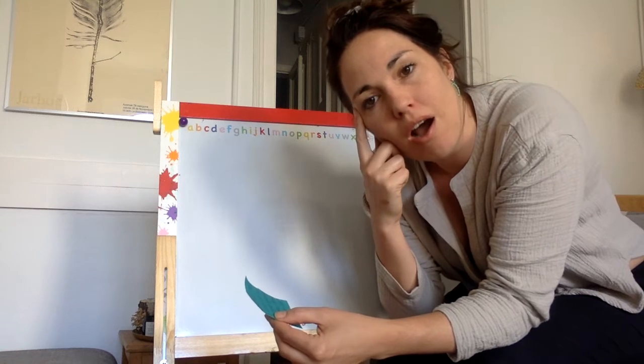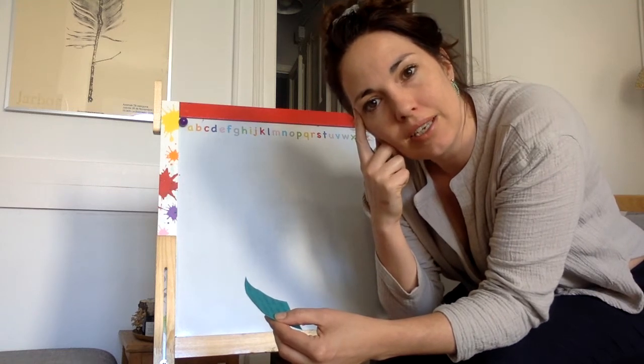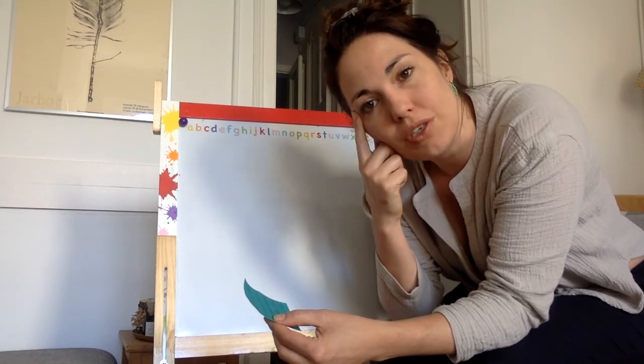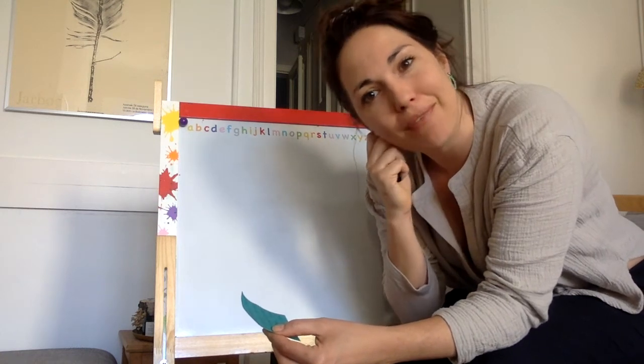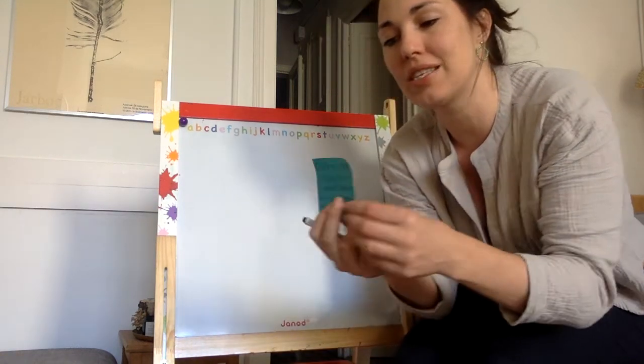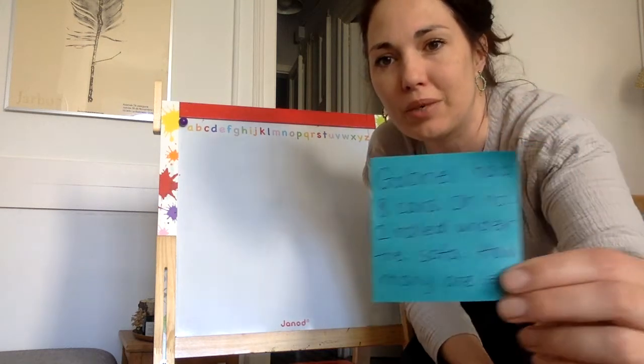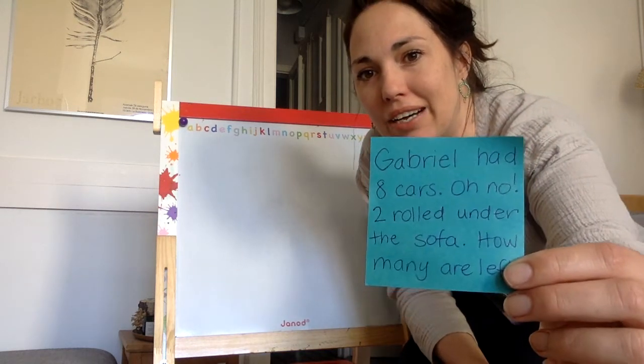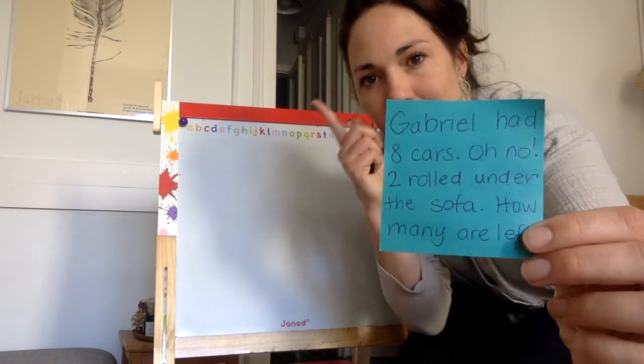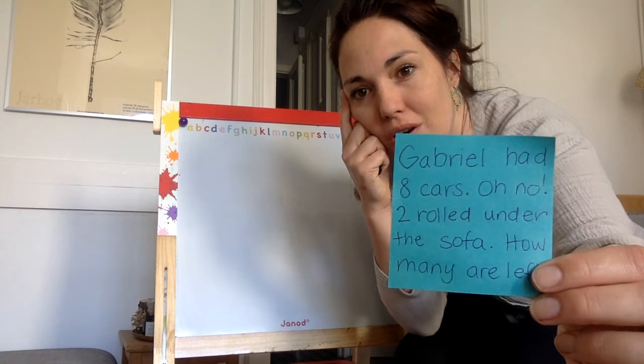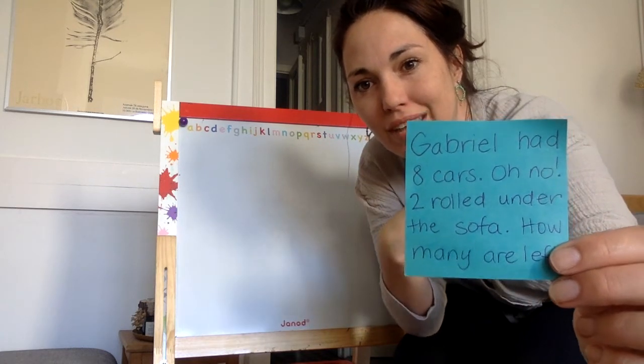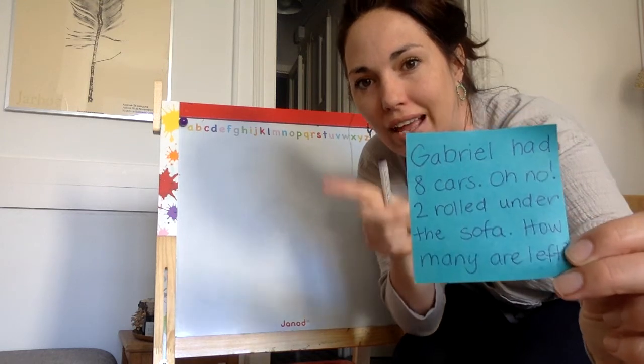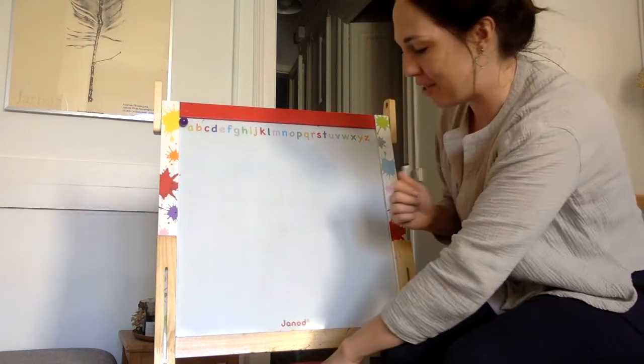Now did you hear those words? Are left? When we hear are left, usually it means we're taking something away, and the kind of math we need to do is subtract. So let's reread that problem and make sure we know what it says. Gabrielle had eight cars. We're going to keep eight in our minds. Oh no, two rolled under the sofa. So two are leaving. How many are left? So are left is our big clue that we're going to subtract.